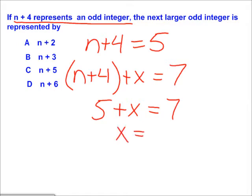To solve for x, subtract 5 from 7. x will equal 2.